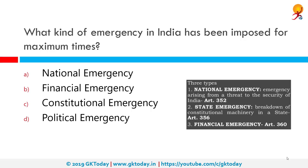What kind of emergency in India has been imposed for the maximum time? The correct answer is constitutional emergency, also known as president's rule in states or state emergency. There are three types of emergency as defined by the Indian constitution: national emergency, president's rule in states (state emergency), and financial emergency.